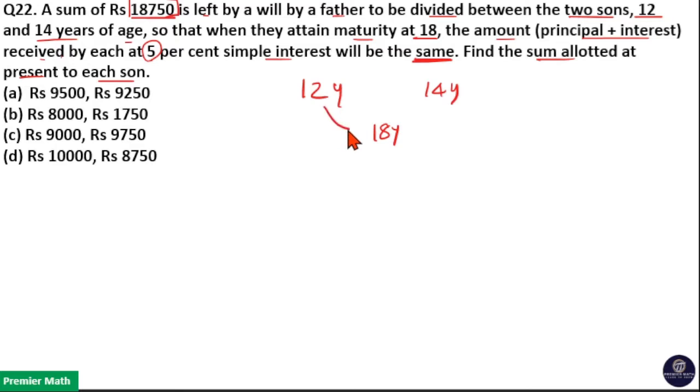That is here 12 plus 6 is 18. So 12 year old son get 6 years interest and 14 plus 4 is 18. So 14 year old son get 4 years interest.